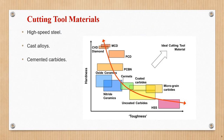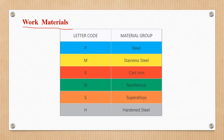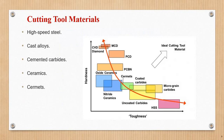Here you can observe: P is steel, M, K, N, S, H. N is coated carbide. Coated carbide cutting tools are used in non-ferrous metals, and blue (P) is used in steels. For steels, nitride ceramics or oxide ceramics materials are used. Uncoated carbides are in two categories.